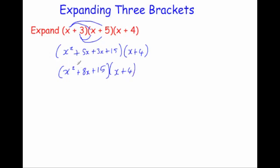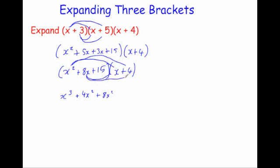To do that, we're going to multiply the x squared by the x, x squared by the 4, the 8x by the x, and the 8x by the 4, and the 15 by the x, and the 15 by the 4. So x squared times x is x cubed, x squared times 4 is plus 4x squared, 8x times x is plus 8x squared, and 8x times 4 is plus 32x.